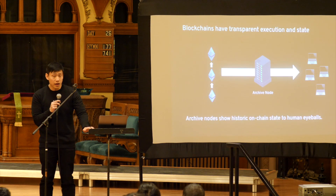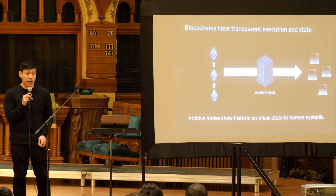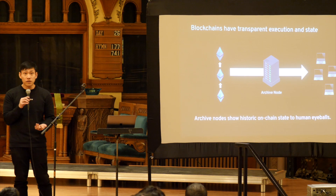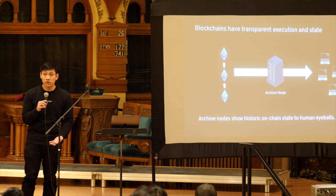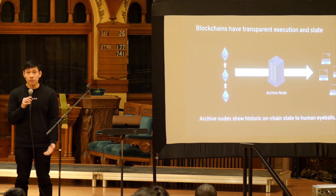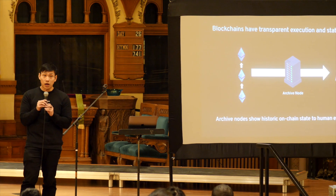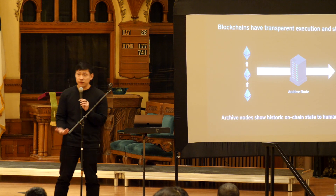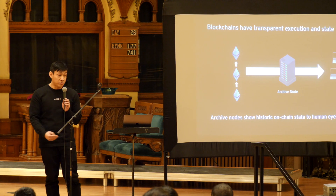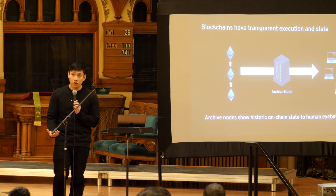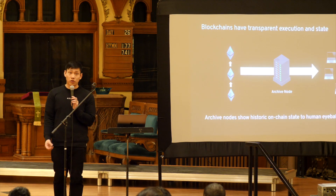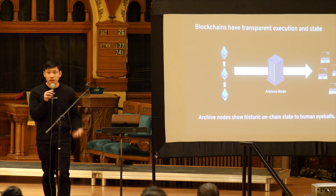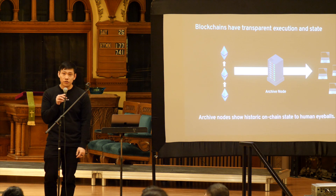Let's look at how normal users access blockchain data today. One of the really interesting properties of execution on blockchain is that all states and all execution is transparent. This is obviously challenging for privacy, but it does mean that running a program on Ethereum offers the highest level of possible transparency. The way that users will access that on-chain is via querying some type of archive node, either one they run themselves or one run by some sort of external JSON RPC provider.